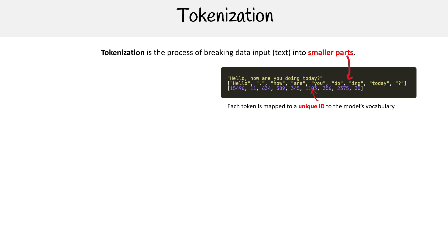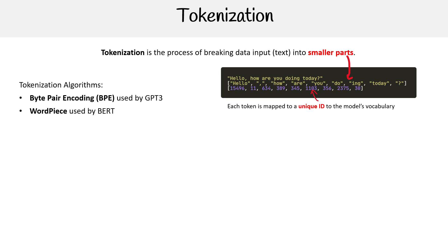So when we're working with LLMs, you have to tokenize inputs. And depending on what LLM you're using, it's going to use a different tokenization algorithm. For example, if you're using GPT-3, you'd be using byte pair encoding. If you're using BERT, you'd be using Wordpiece.